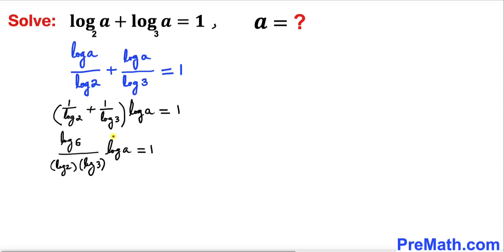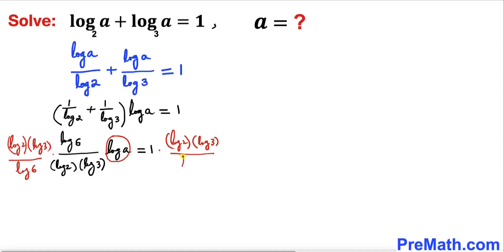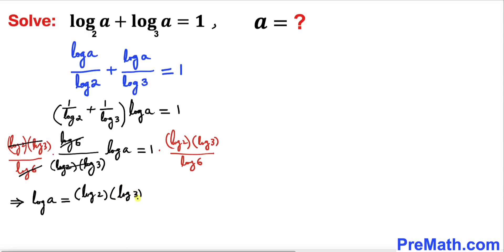Now we want to isolate log of a. We multiply both sides by the reciprocal of the fraction — that is, log 2 times log 3 divided by log 6. The fraction cancels out on the left, leaving: log a equals log 2 times log 3 divided by log 6.